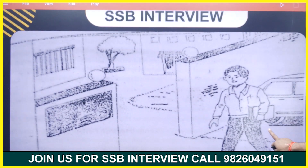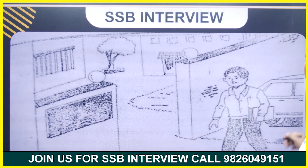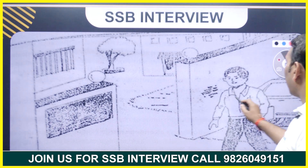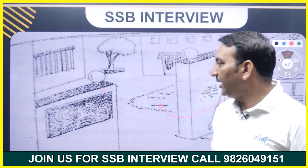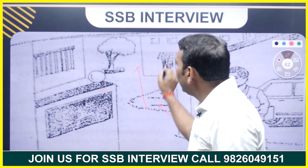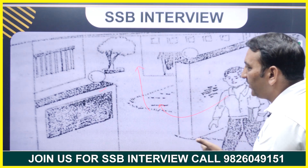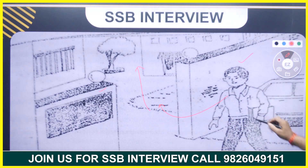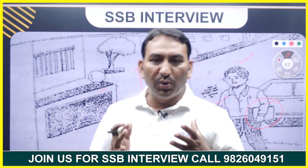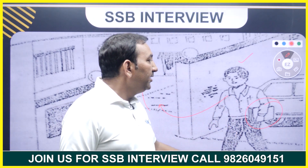In today's PP DT, the picture is very clear — this is a hazy one but the things are clearly seen. Here a guy is going, a board is here, and this building looks like an institution — it may be a school building, college building, or a research institution. The guy is coming and he has a book-like material or file in his hand.